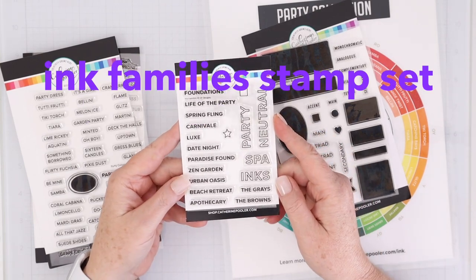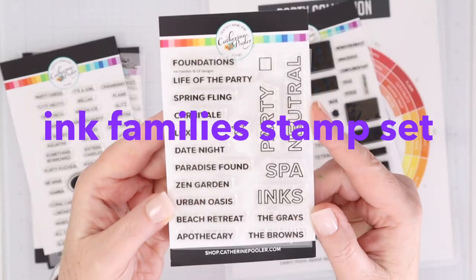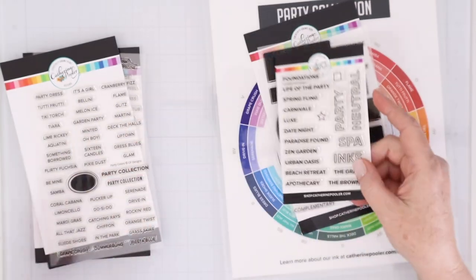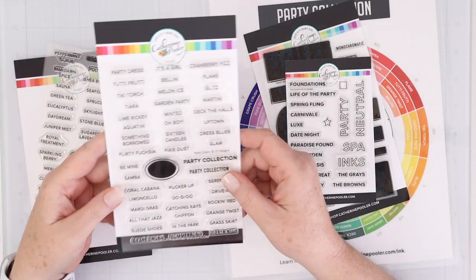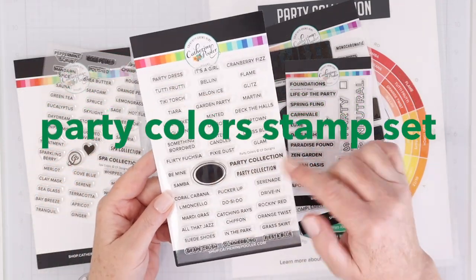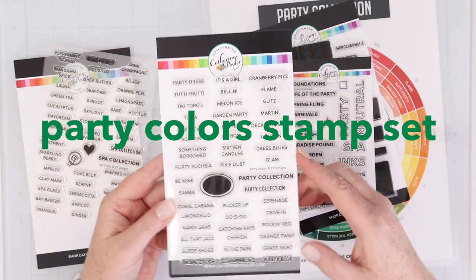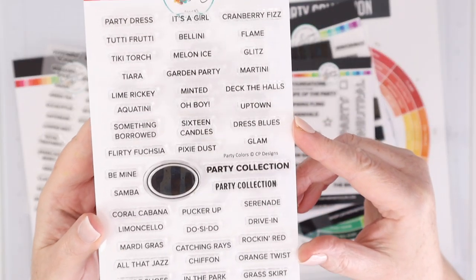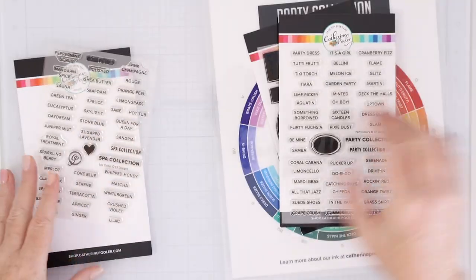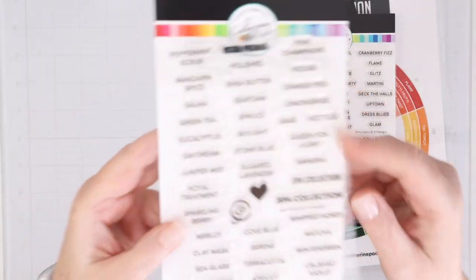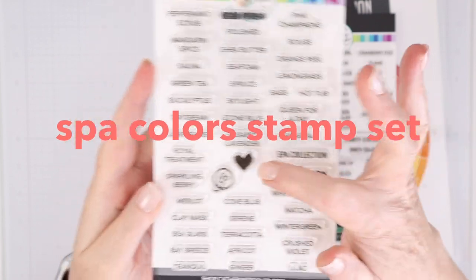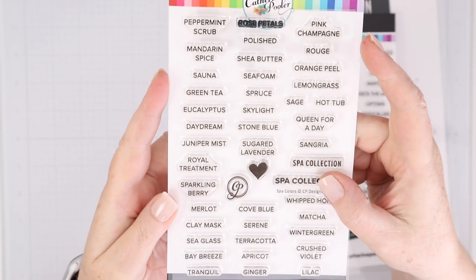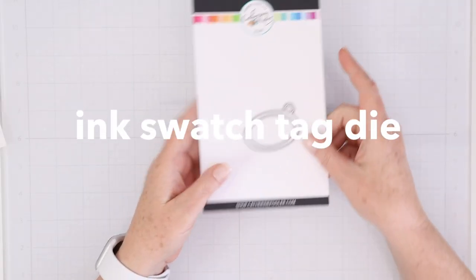Then we have the ink families stamp set. Now this represents all of the ink families within the two collections, things like Date Night which is one of the families that I own. And then there are the Party Colors stamp set - this represents every single color that is within the party collection and then you also have that nice little oval that you could use as a stamp swatch as well. This is the Spa Colors stamp set. Again you have a little heart to swatch and then you have all the names of the inks within the spa collection.